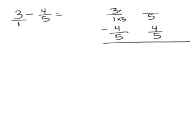I multiply times 5. 3 times 5 is 15. 15 fifths minus 4 fifths is 11 fifths.